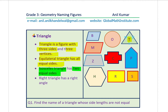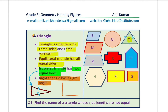Let me sketch an isosceles triangle to make it clear. If I have a triangle like this, these two sides are equal — when I draw lines like this across the sides, it means they are of equal length. So this is an example of an isosceles triangle. Now, a right triangle has a right angle. At one corner we have a right angle — a square corner — and that makes it a right triangle.